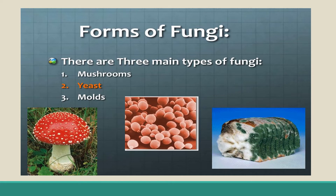All fungi are heterotrophic — they cannot make their own food. Most fungi are saprophytes that grow on dead and decaying matter. There are a few fungi that are parasitic, living on or inside the body of a living organism and causing diseases.